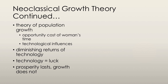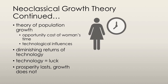Continuing with neoclassical growth theory, the key influence that slows population growth rate is the opportunity cost of a woman's time. Because as wages increase and job opportunities expand, the opportunity cost of having children increases, and this results in fewer babies actually being born.